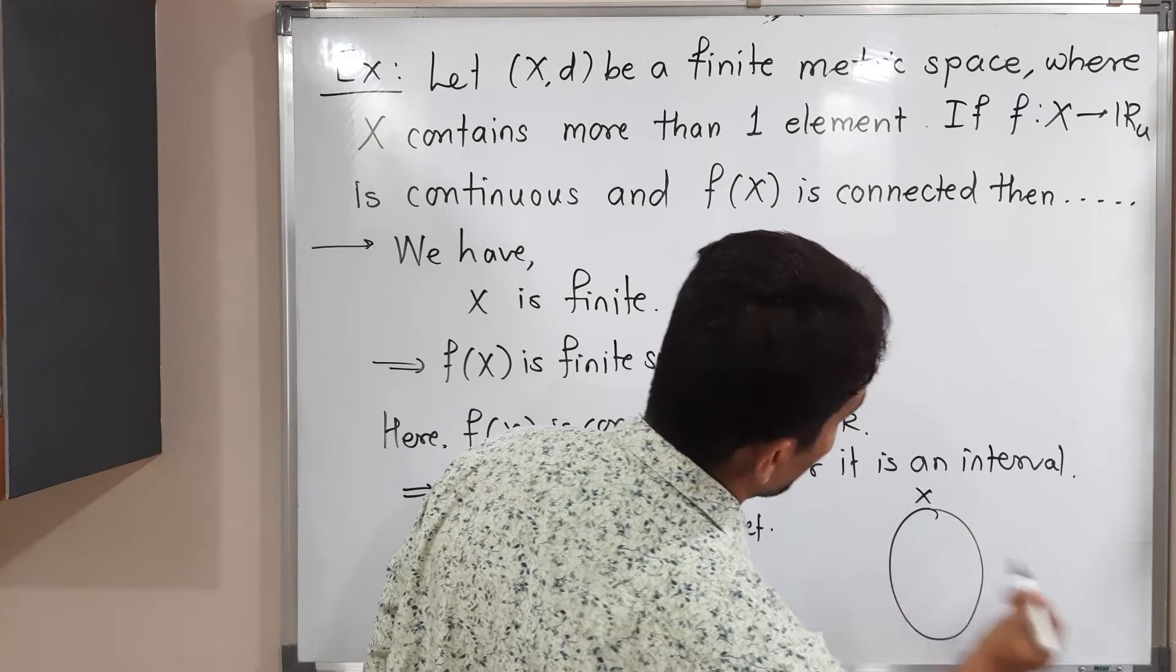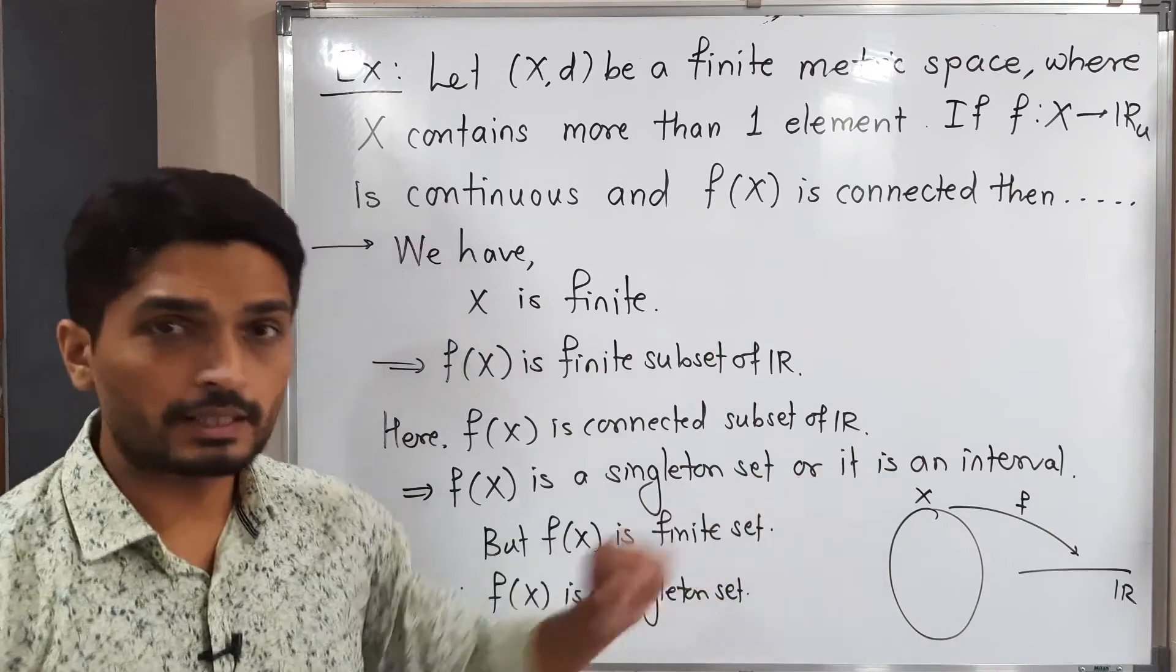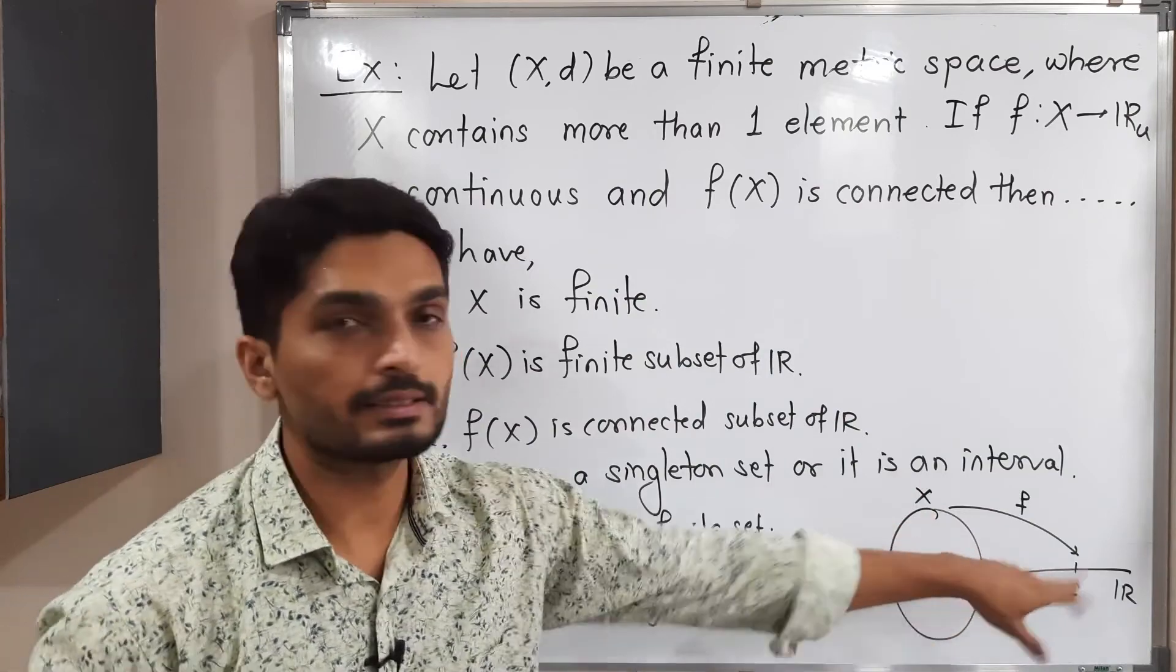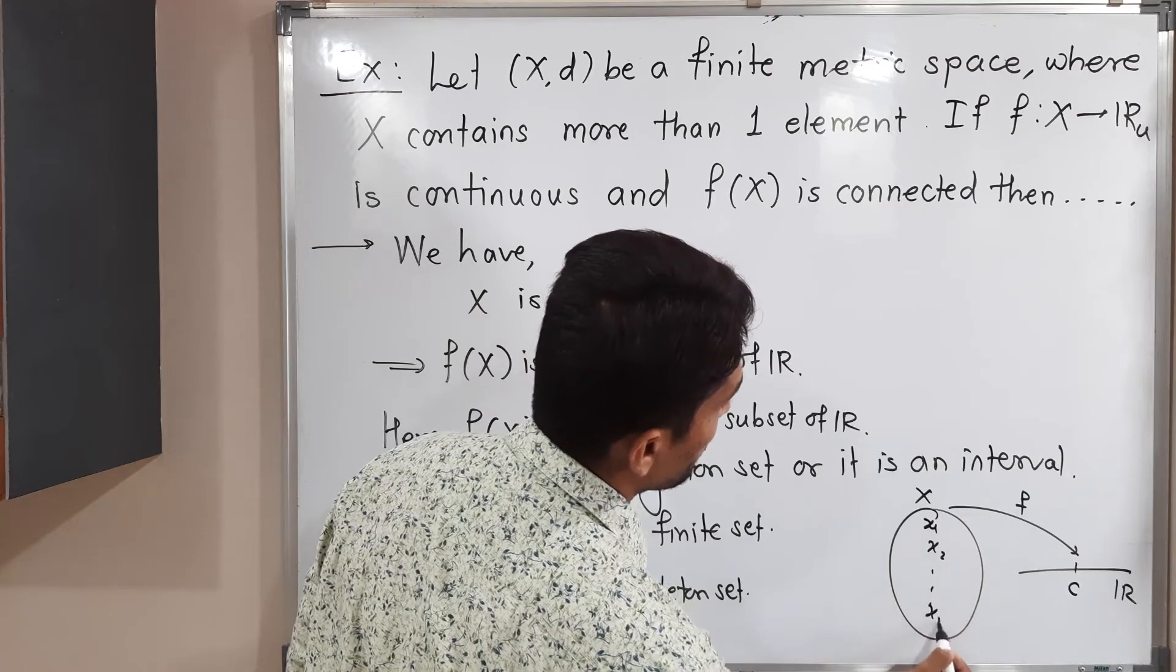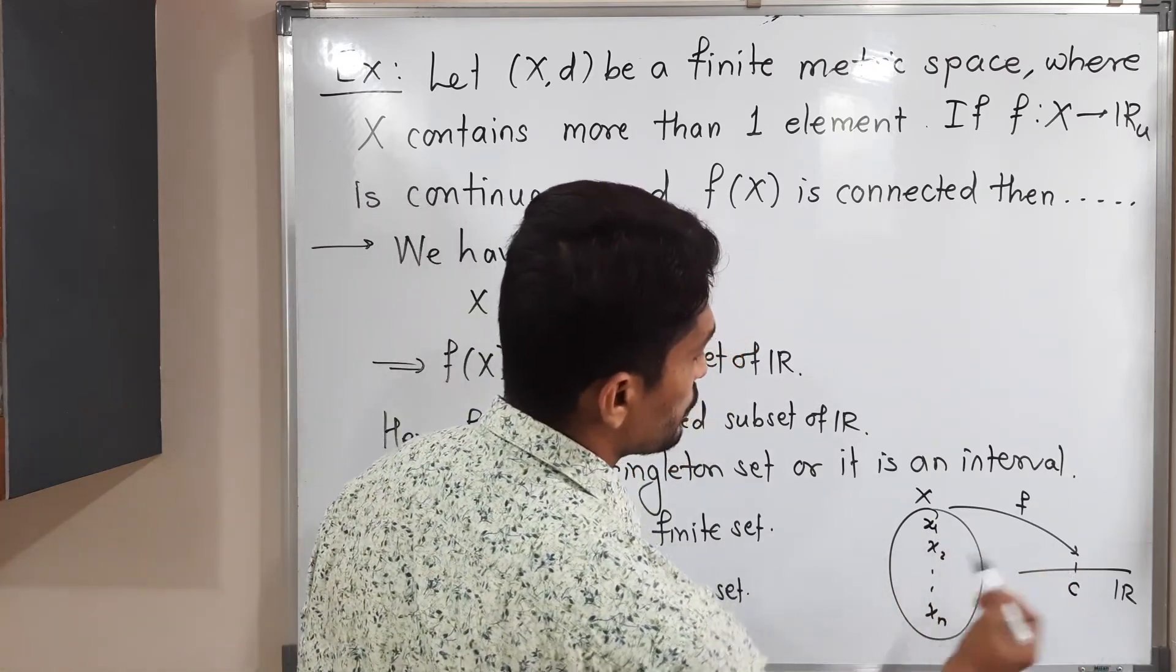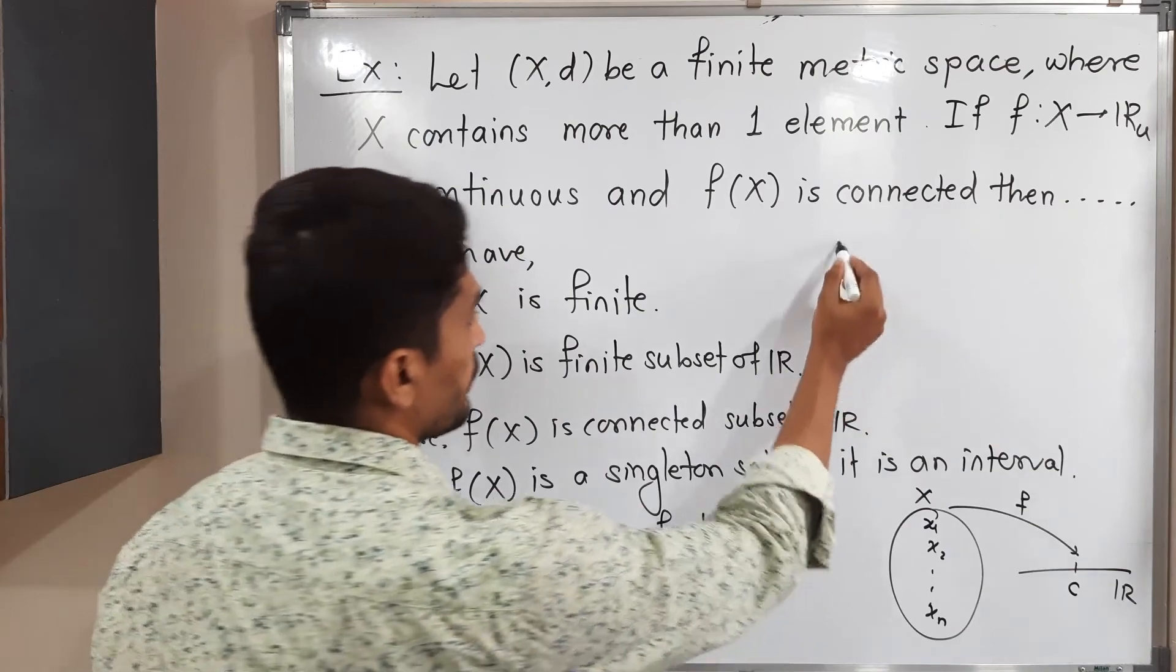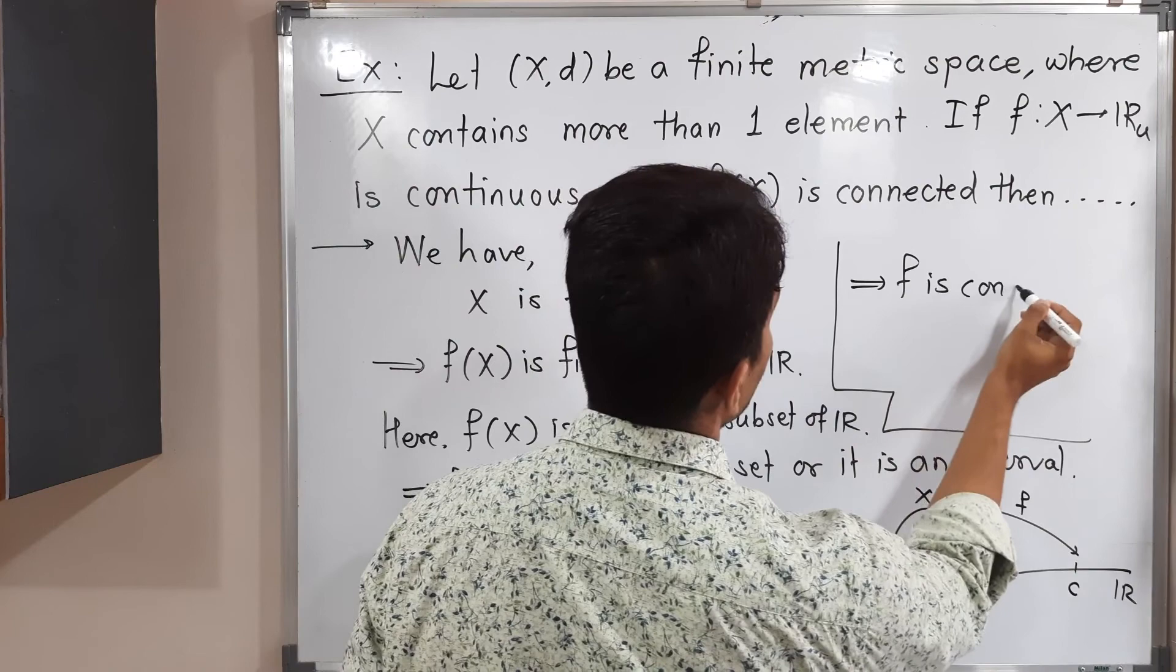What does it mean? It means suppose this is a metric space X, and this is the real line ℝ. We have a function from X to ℝ. So f(X) is a singleton set, meaning there is only one point c such that the image of all elements is c. Suppose here are some elements x₁, x₂, and so on, xₙ. f(X) is a singleton set means x₁ goes to c, x₂ goes to c, x₃ goes to c, and so on, xₙ also goes to c. That means f is a constant function.